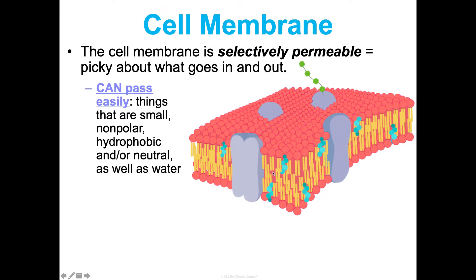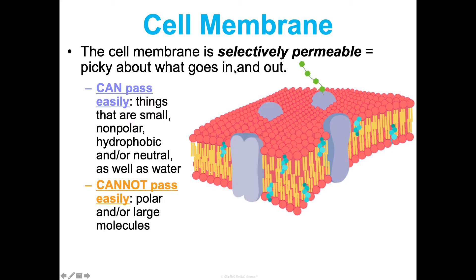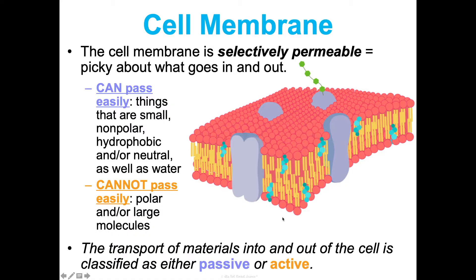What can go through the cell membrane easily? Small molecules can get through easily. Non-polar, hydrophobic, and neutral molecules can get through easily. Water, even though it's polar, can get through easily because it's really, really small — though in large amounts it needs to move through aquaporins. What cannot get through easily are polar molecules; they can't pass through those non-polar tails. Large molecules can't squeeze through either. So they need help to get in and out of the cell.